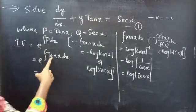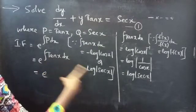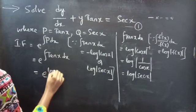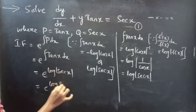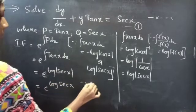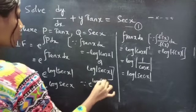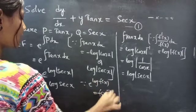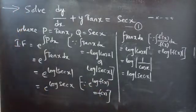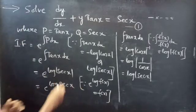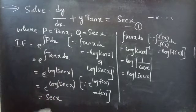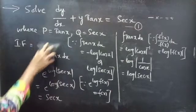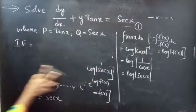So, e raised to ∫tan(x) dx = e raised to log|sec(x)|. Since e^(log f(x)) = f(x), we get e^(log sec(x)) = sec(x). Therefore, the integrating factor is sec(x).